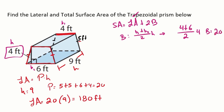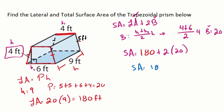Now substituting into the total surface area formula: lateral area is 180, and the area of one base is 20. Two times 20 is 40, and 180 plus 40 gives a total surface area of 220 feet squared.